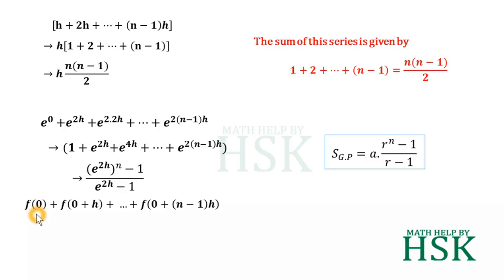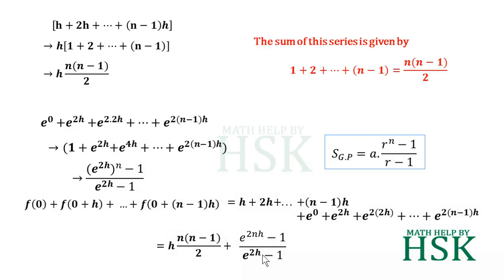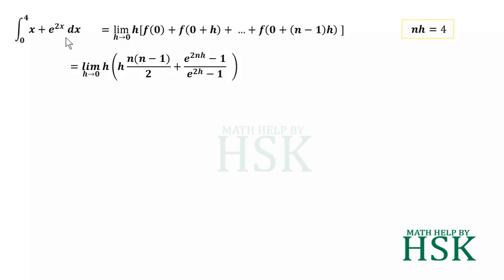Therefore, the total sum f(0) + f(0+h) + ... + f(0+(n-1)h) equals h·n(n-1)/2 + [e^(2nh) - 1] / [e^(2h) - 1]. Substituting this into the definite integral expression, we get the integral equals the limit as h→0 of h × [n(n-1)/2 + (e^(2nh) - 1)/(e^(2h) - 1)].